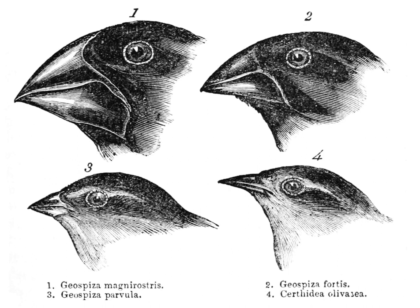Darwin's finches are a group of about 15 species of passerine birds. They are well known for their remarkable diversity in beak form and function. They are often classified as the subfamily Geospizini or Tribe Geospizini. They belong to the Tanager family and are not closely related to the true finches. The closest known relative of the Galapagos finches is South American Tiaris obscurus. They were first collected by Charles Darwin on the Galapagos Islands during the second voyage of the Beagle.